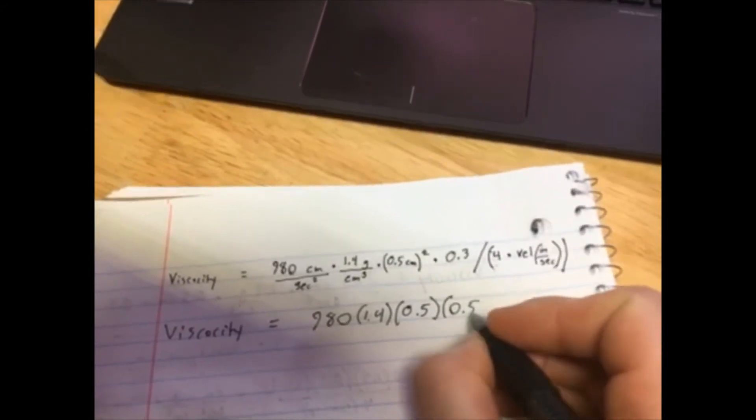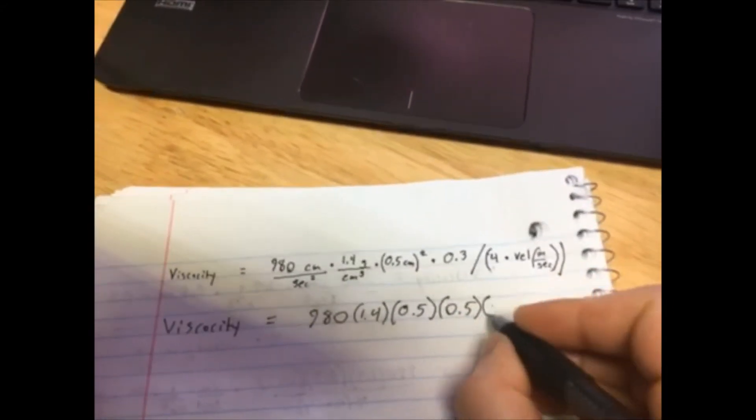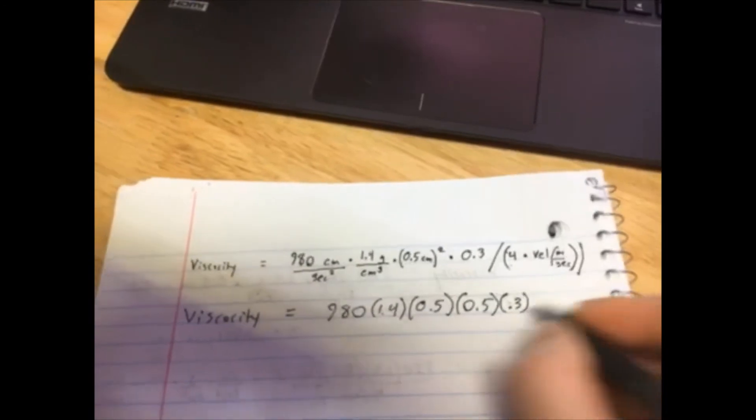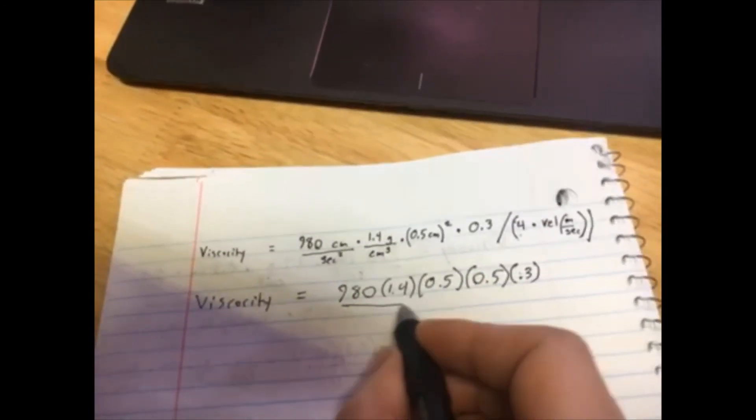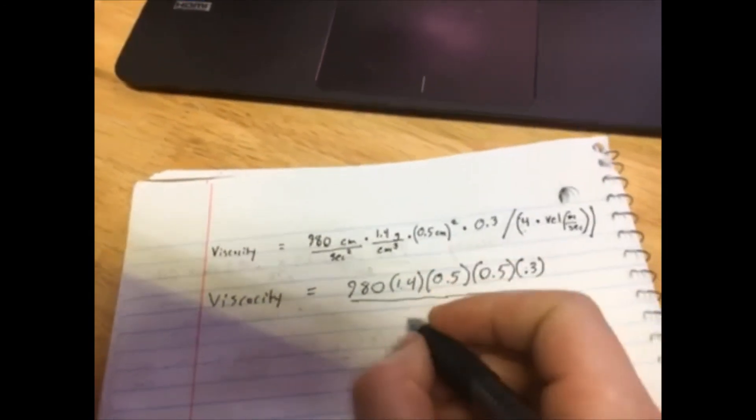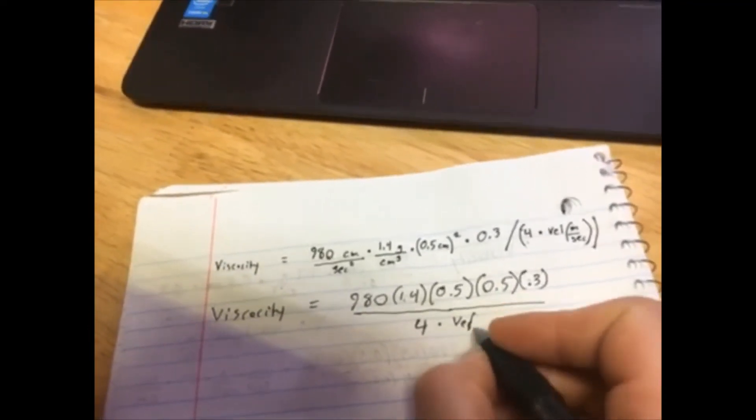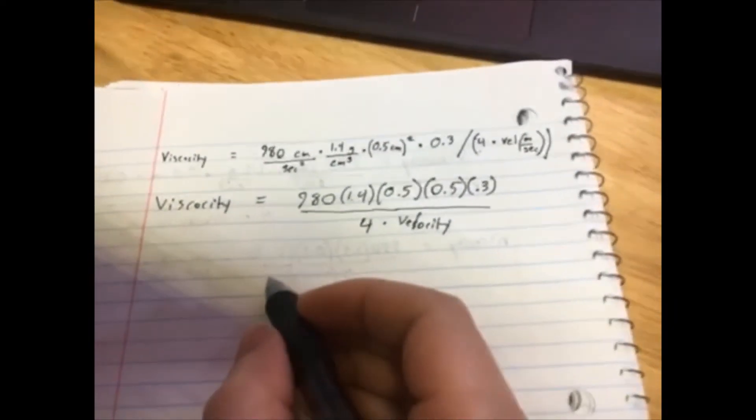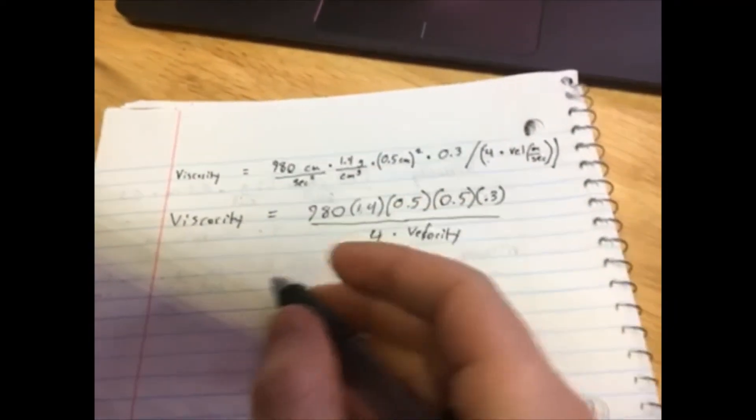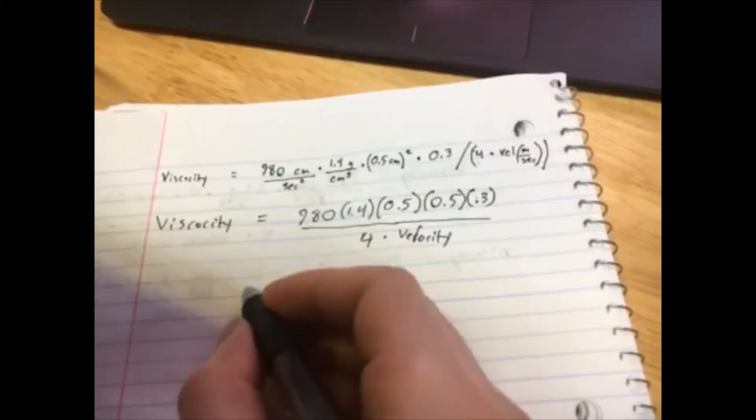divided by four times the velocity. And the units end up being